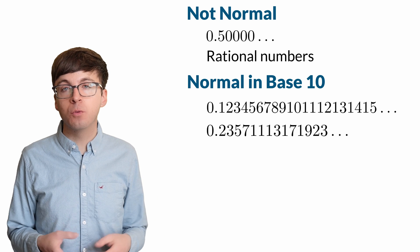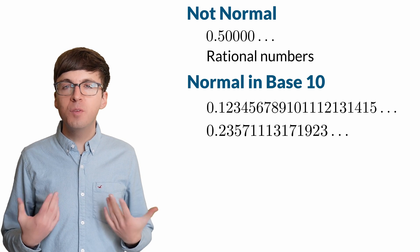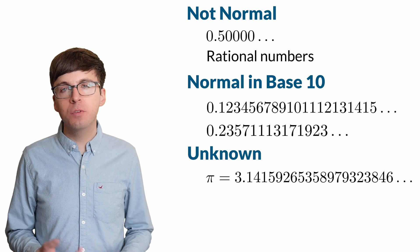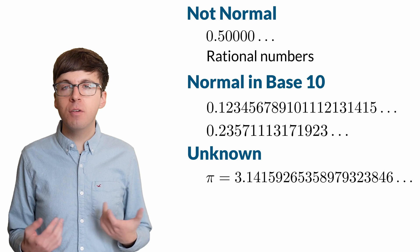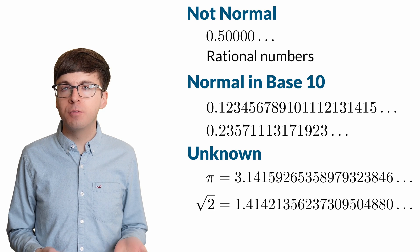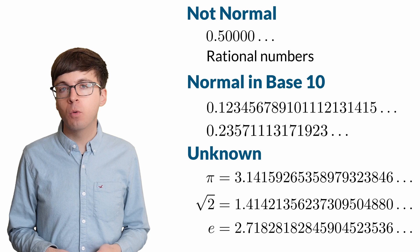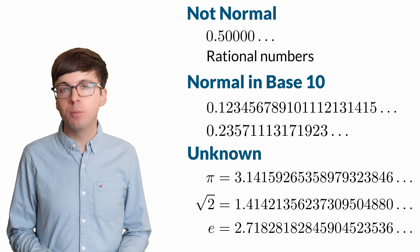So, is pi a normal number? Well, no one knows for sure, but many mathematicians believe that it is. Other irrational numbers, like the square root of 2 or e, are also believed to be normal, but no one has a way to prove it.